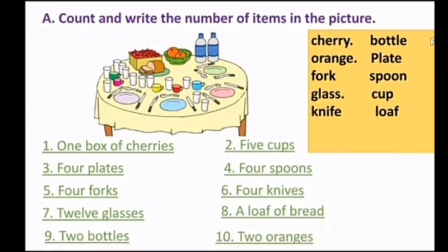Exercise: Count and write the number of items in the picture. Pictures mein ek dining table diya hai, uske upar bahut saari cheezen hain, toh aapko unko count karna hai aur likhna hai. Answers: one box of cherries, five cups, four plates, four spoons, four forks, four knives, twelve glasses, a loaf of bread, two bottles, two oranges.